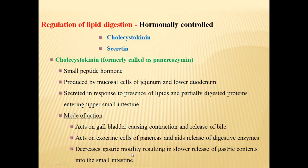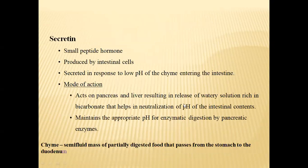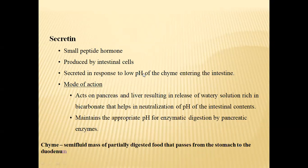The bile juice contains bile salts — sodium glycocholate and sodium taurocholate — which are very important in emulsifying lipids. Cholecystokinin also acts on exocrine cells of the pancreas and aids the release of digestive enzymes. This hormone also decreases gastric motility, resulting in slower release of gastric contents into the small intestine.